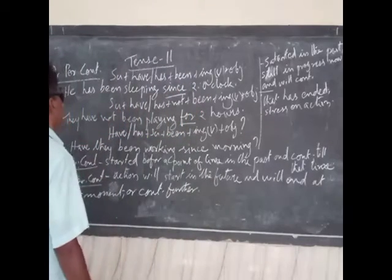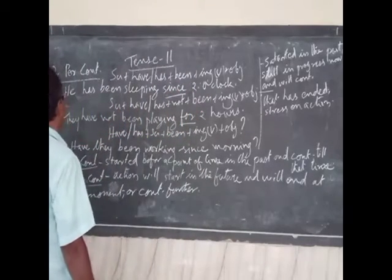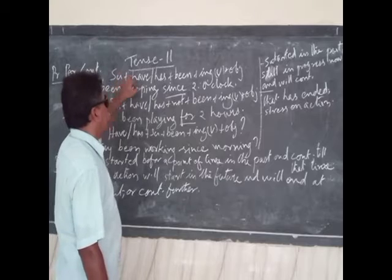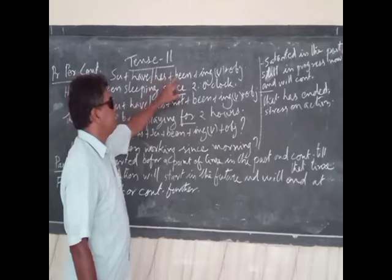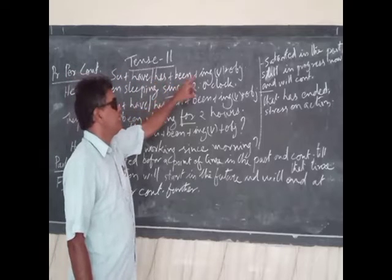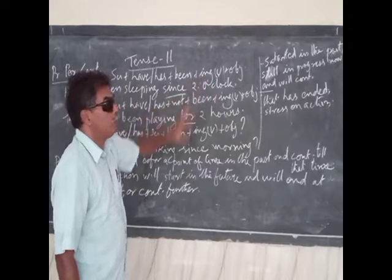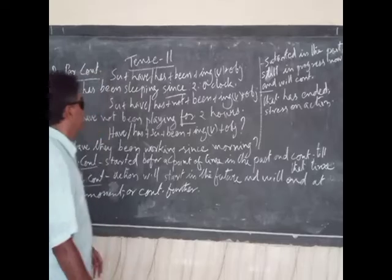The sentence structure of present perfect continuous is: subject plus have or has plus been plus ING form of the verb plus object.